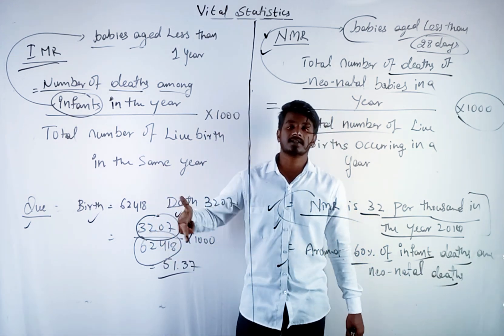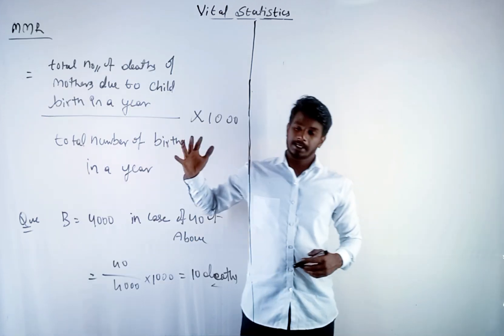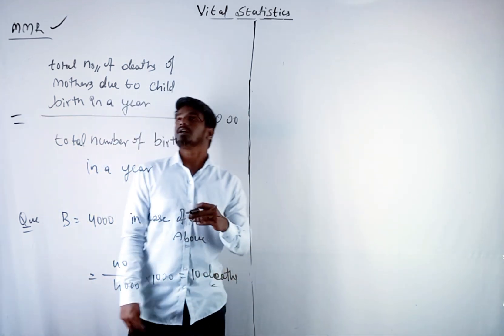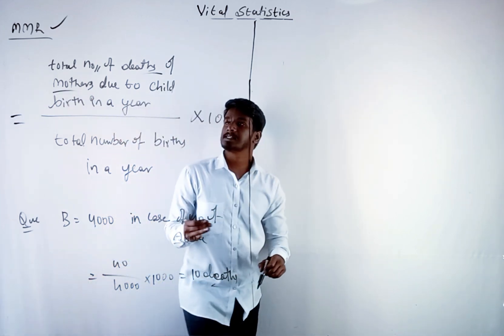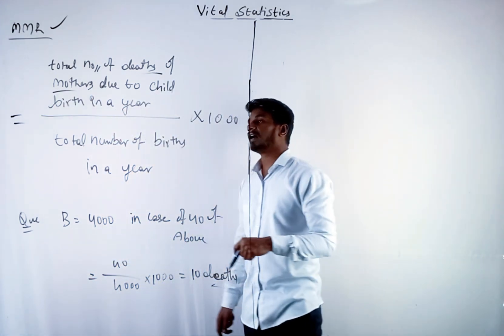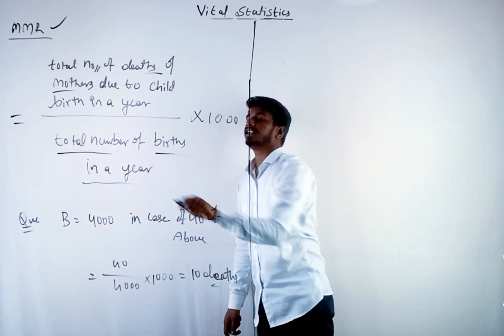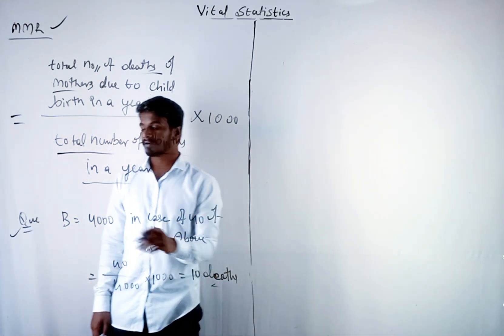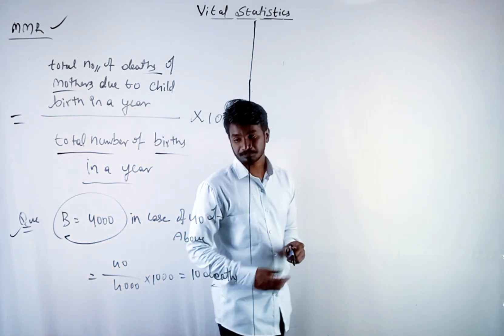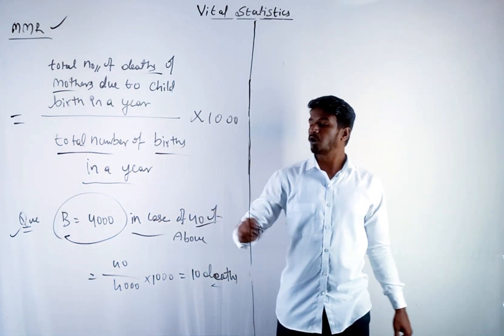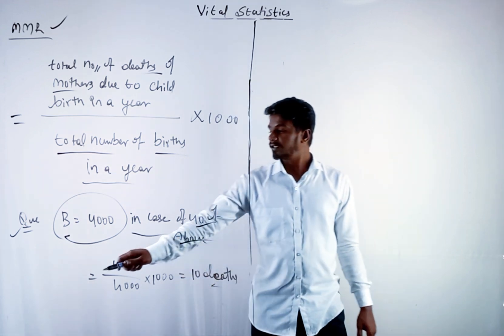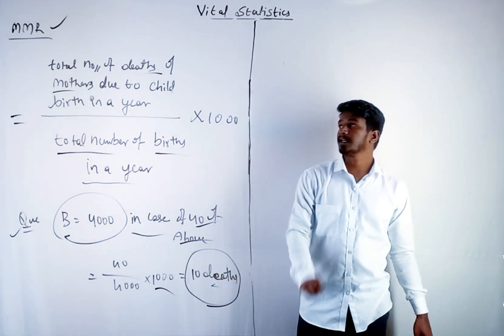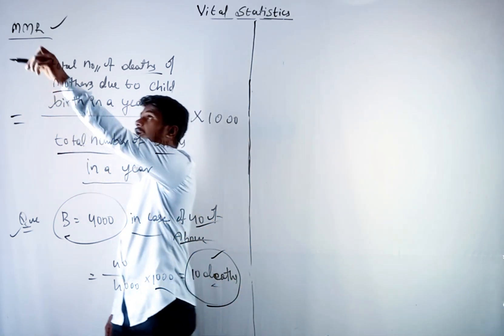Let us see the third one and finish this chapter. The last one is MMR. The formula is total number of deaths of mothers due to childbirth in a year divided by total number of births in a year into 1000. Let us take a question. 40 divided by 4000 into 1000—your answer will be 10 deaths. This is the answer for MMR.